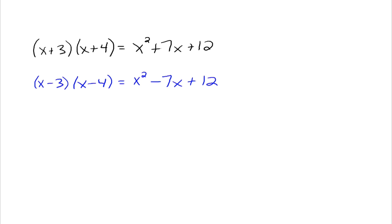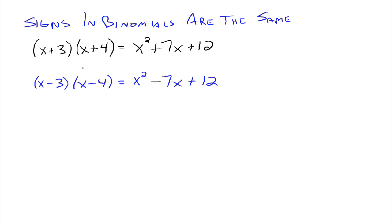x minus 3 times x minus 4 multiplies out to give us x squared minus 7x plus 12. In general, if a trinomial is going to factor, it's going to factor into a product of binomials. I want to talk about these binomials — look at x plus 3 and x plus 4. These two binomials have the same sign in the middle. And x minus 3 and x minus 4 also have the same sign in the middle — they're both minus, or up here they're both plus.